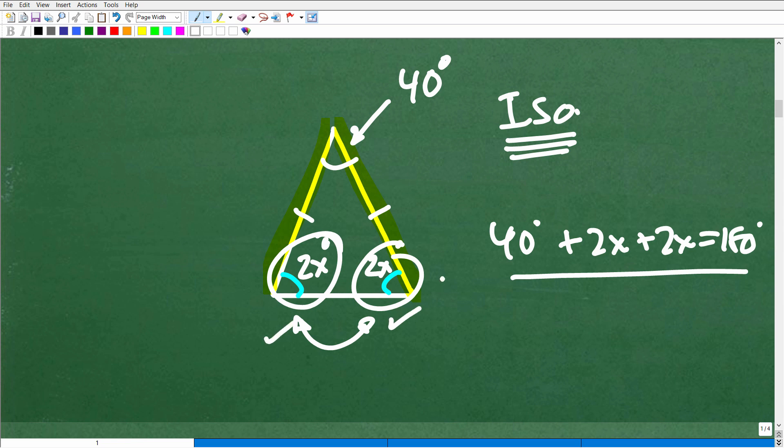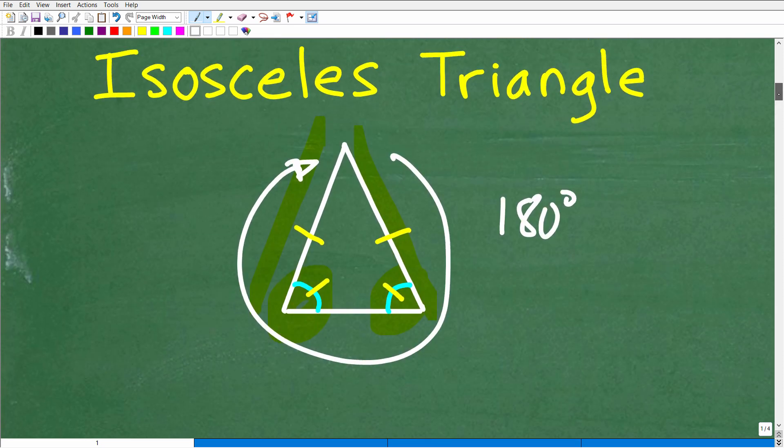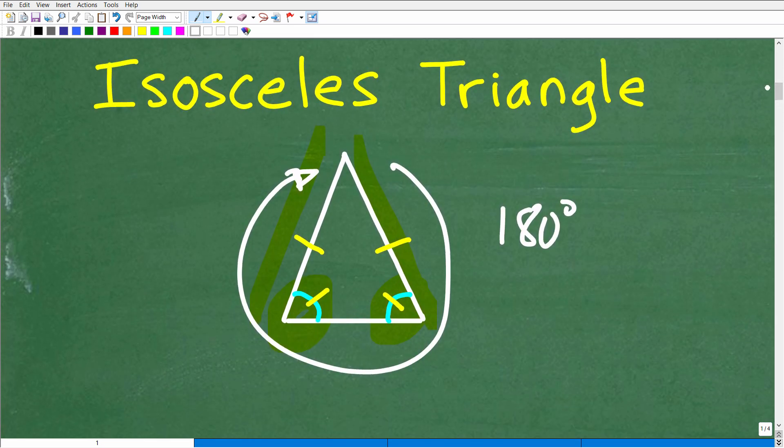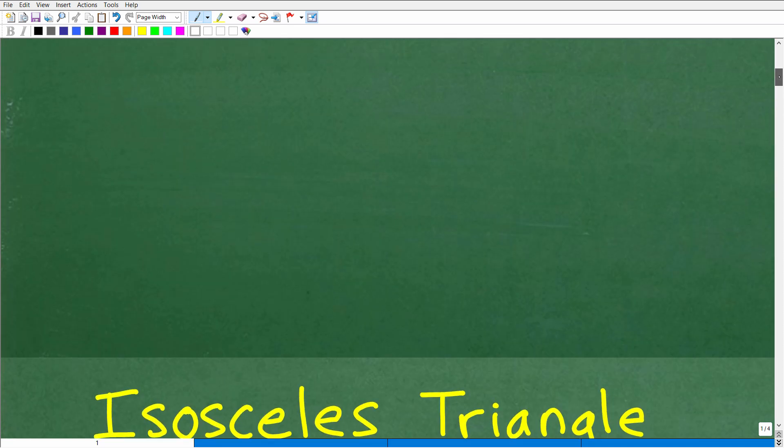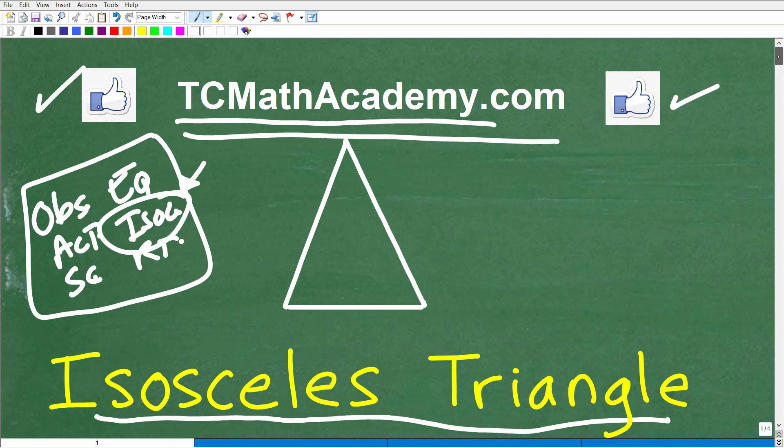So triangle problems are pretty much universal in terms of how to solve them. Not all of them, but a lot of them. But a lot of it comes down to knowing the specific characteristics of what type of triangle you're dealing with. So in this case, we took a close look at the isosceles triangle. But remember, there's other types of triangles.